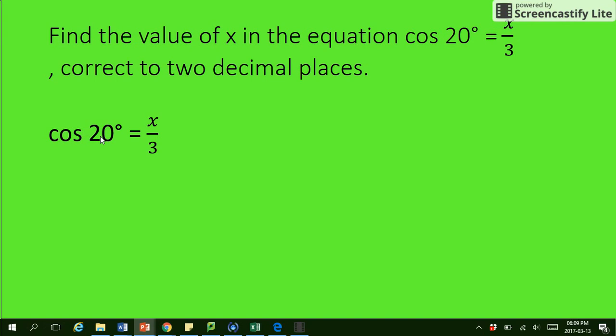So we start off with cos 20 is equal to x divided by 3. Now, these two are going to do a switcheroo. And because this one's coming over here, we're now going to times it with this 3. Okay, so look here. So x, we've now put on this side, is equal to 3 times cos 20.